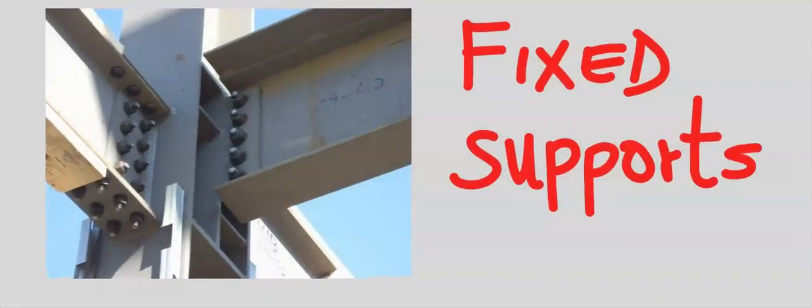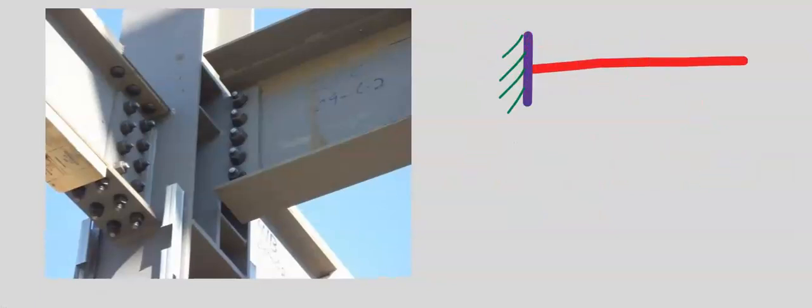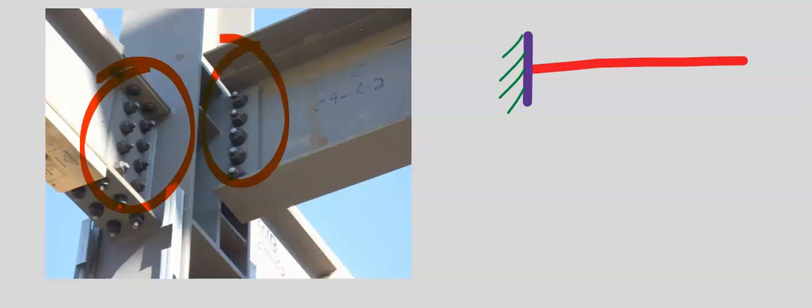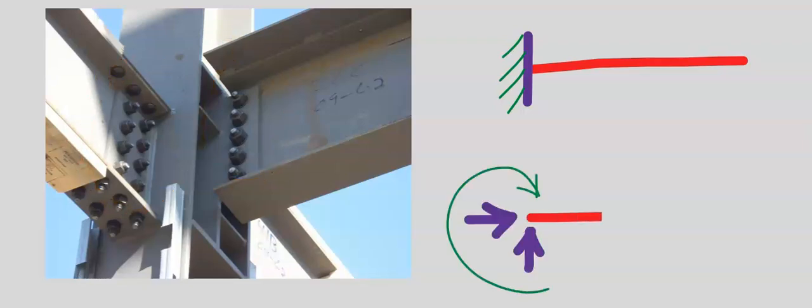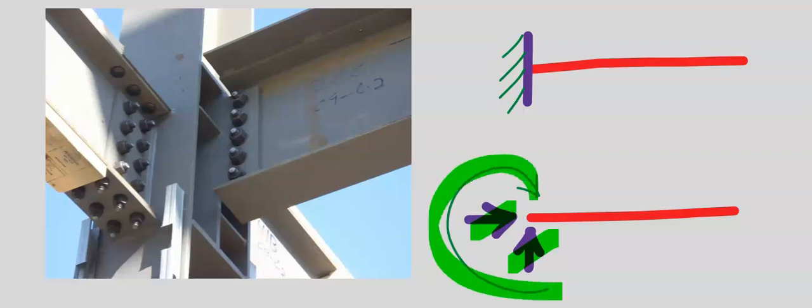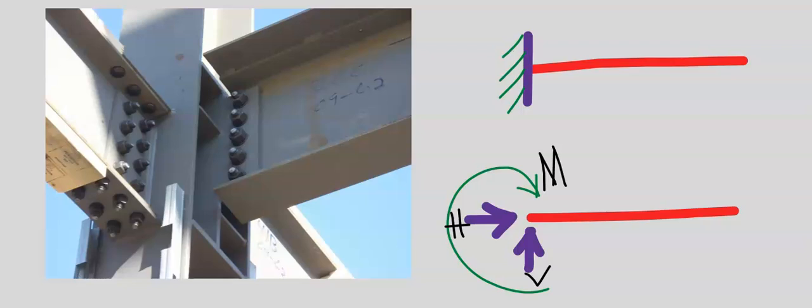Fixed supports: Fixed connections can be welded or bolted or screwed together. Fixed supports can resist vertical forces, horizontal forces, and bending moments. These three restraints stop the supported structure both from rotational and translational movements, making it a rigid support.